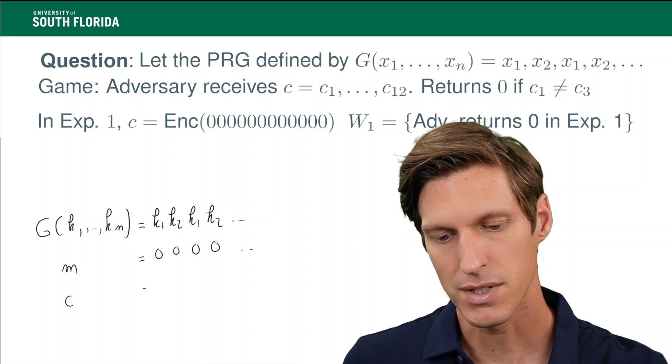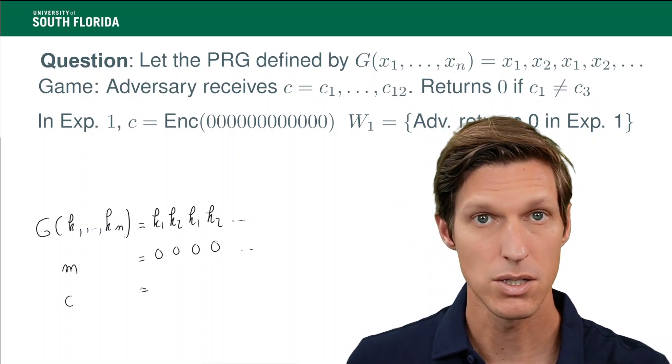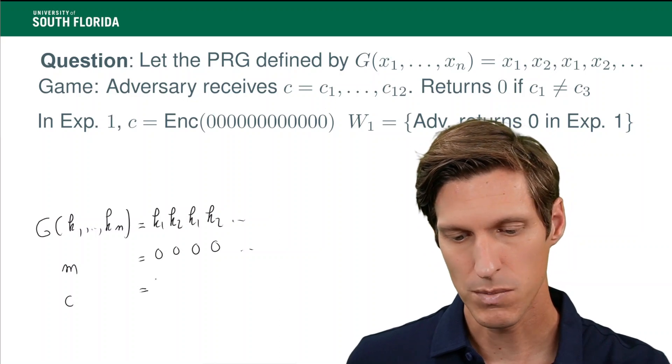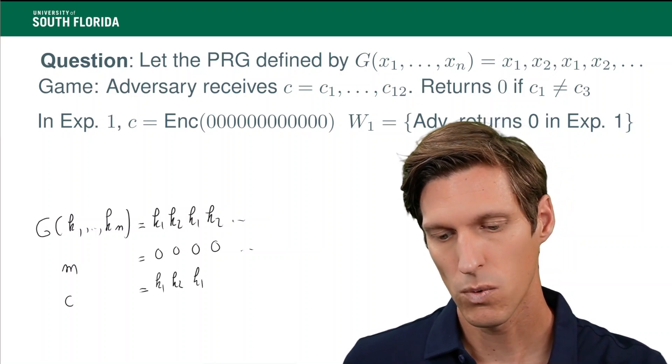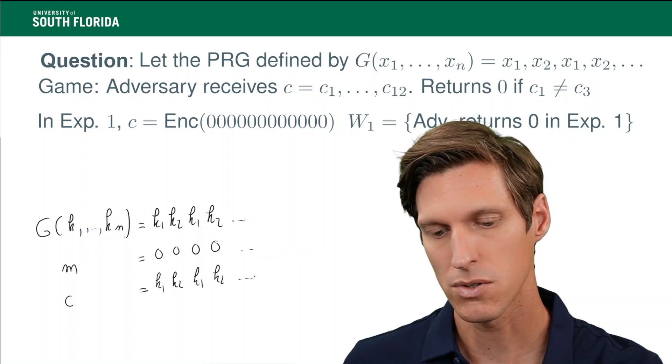And therefore, the ciphertext is the XOR of the message with the keystream. So here it's k1, k2, k1, k2, etc.